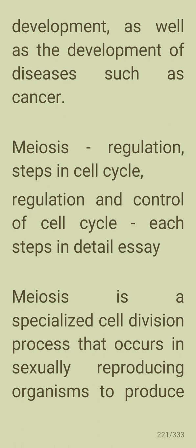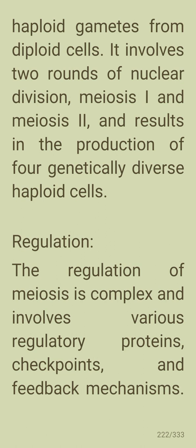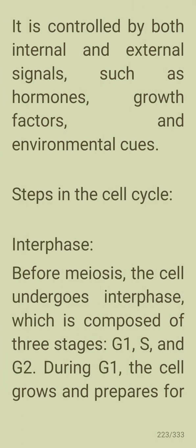Meiosis is a specialized cell division process that occurs in sexually reproducing organisms to produce haploid gametes from diploid cells. It involves two rounds of nuclear division — meiosis one and meiosis two — resulting in the production of four genetically diverse haploid cells. The regulation of meiosis is complex and involves various regulatory proteins, checkpoints, and feedback mechanisms.